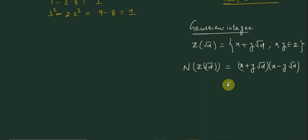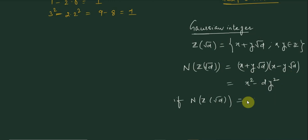So the norm of the Gaussian integer Z(√d) is defined as x² - dy², and this is nothing but Pell's equation.